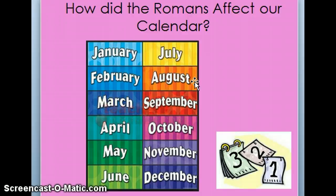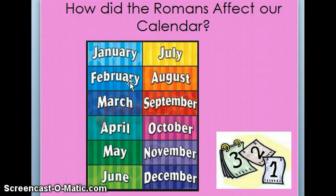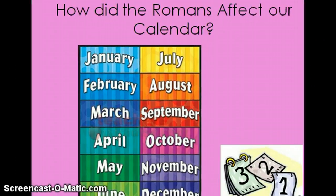January is also named after the Romans — after the god Janus, the god of beginnings and endings. They say Janus had two faces: one that looked back and one that looked forward. That's why they named the first month of the year after this god — you're looking back on the old year and forward to the new year. February is named after Februa, which were festivals held by the Romans.